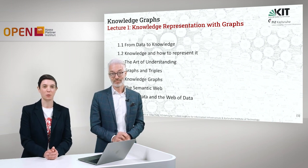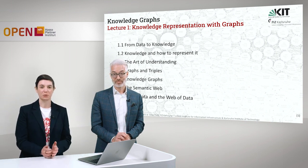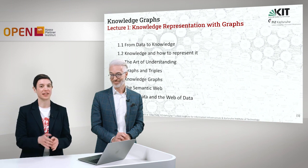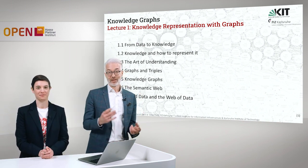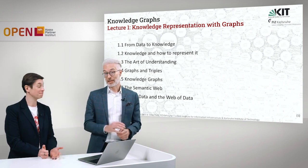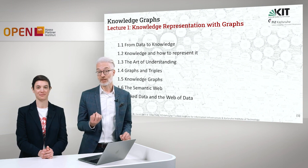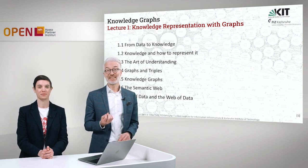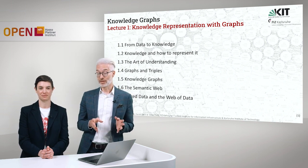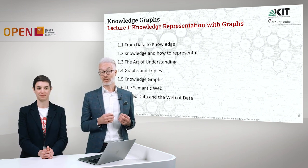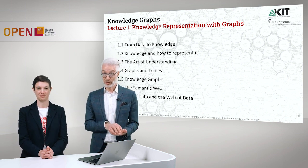In the next lecture we will talk about the art of understanding — what makes language ambiguous and what it actually means to understand. Language is rather highly ambiguous and therefore not necessarily the best means for representing knowledge. We need something more formal. Before we go into that, we will talk about graphs and triples, by which we will introduce a rather intuitive form of representing information and knowledge.